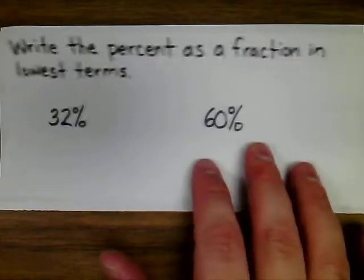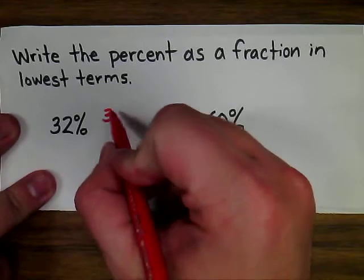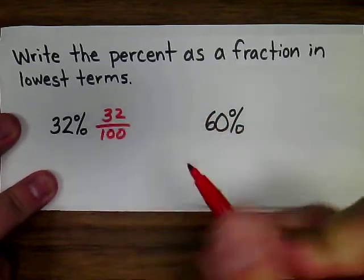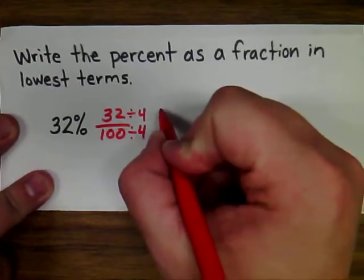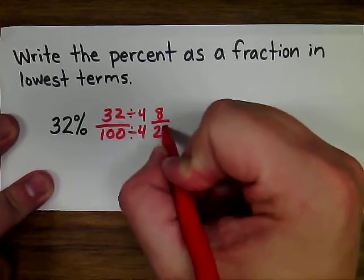So, to write these percents as fractions in lowest terms, first you would write 32 over 100, and then you would just divide by their greatest common factor, which in this case would be 4, and you'd get 8 over 25.